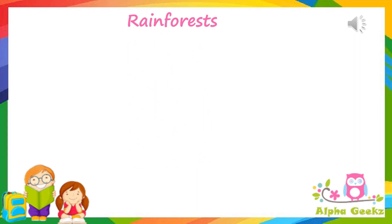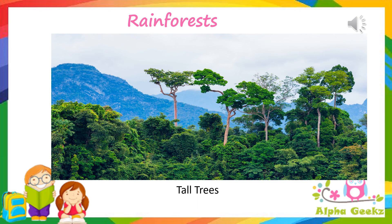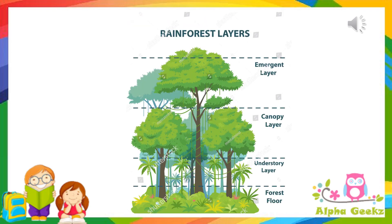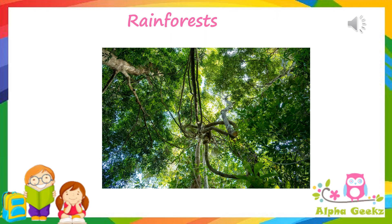Rainforest: The trees in rainforests are generally very tall and their trunks are smooth, which allows the rain to flow down to the roots easily. The trees in rainforests have adapted to the competition for light and therefore grow tall to meet the other plants growing around them. Lianas are a type of vine plant that have adapted to grow on tall rainforest trees so that they can reach the sunlight in the canopy.